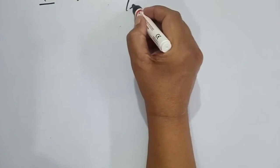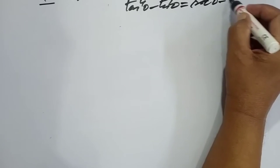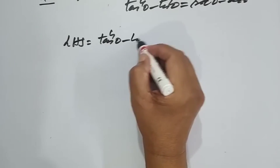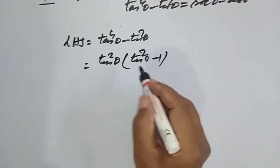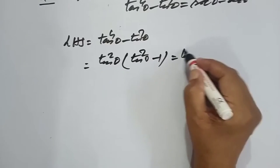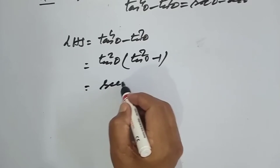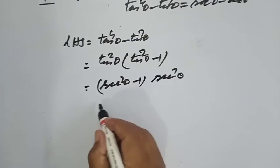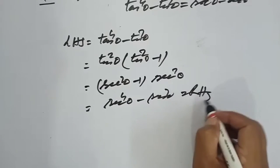The second question is to prove that tan to the power 4 theta minus tan squared theta is equal to sec to the power 4 theta minus sec squared theta. Taking the left-hand side: tan to the power 4 theta minus tan squared theta. Taking tan squared theta common gives tan squared theta times (tan squared theta minus 1). We substitute using the identity, and after multiplying through we get sec to the power 4 theta minus sec squared theta, which equals the right-hand side. Hence the result.